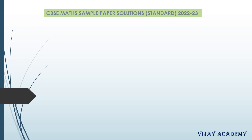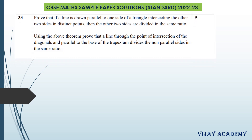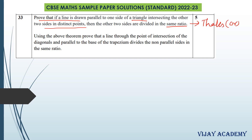Welcome back to Vijay Academy. In this video I will be explaining question number 33 from the sample paper. The question is: we have to prove that if a line is drawn parallel to one side of a triangle intersecting the other two sides in distinct points, then the other two sides are divided in the same ratio. This is the Thales theorem, also called the basic proportionality theorem, and you are supposed to write the proof of this theorem.